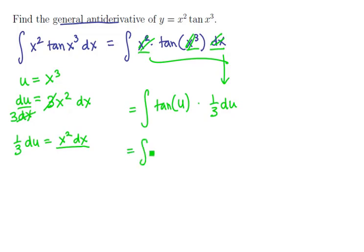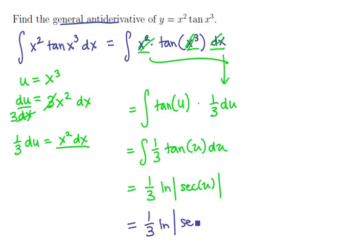Let me clean this up a little bit. This is the integral of 1 third the tangent of u du. That 1 third will come along for the ride, and the antiderivative of tangent is natural logarithm of the absolute value of secant of u. So we just need to make our back substitution, and we'll have 1 third the natural logarithm of the absolute value of the secant